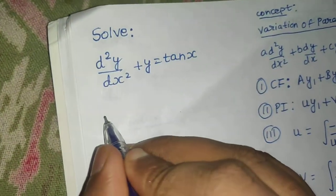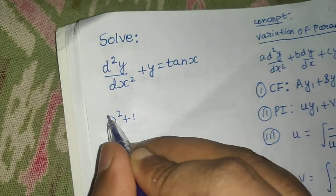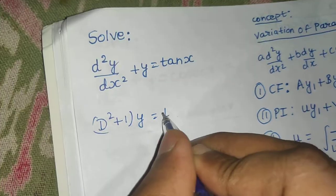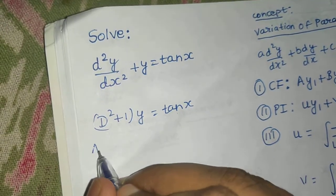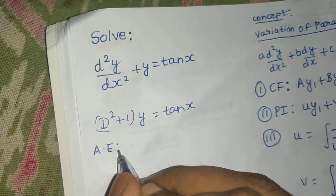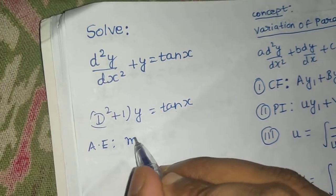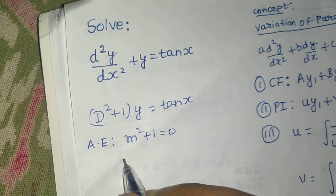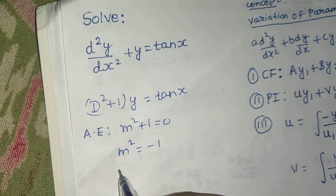Let's move ahead. We can write this as (D² + 1) operating on y equals tan x. To find the complementary function, the first step is to find the auxiliary equation — replace D by m, giving m² + 1 = 0, so m² = −1.